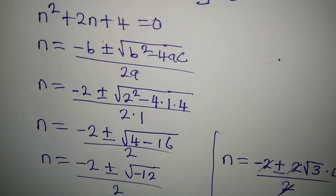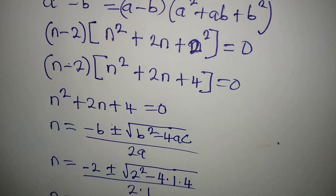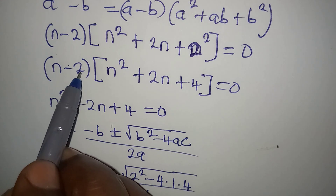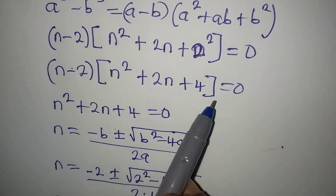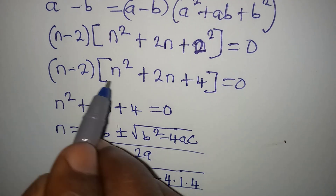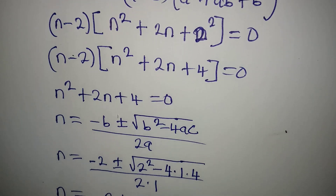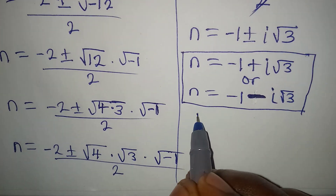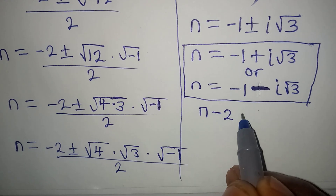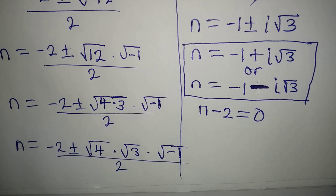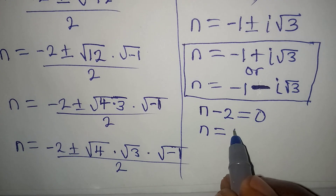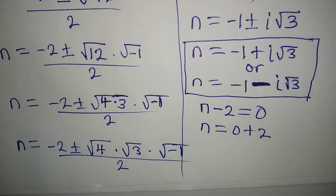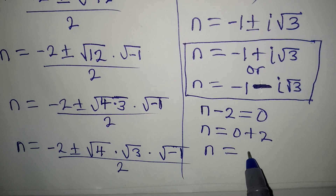To get the real solution, we will go back to the expression n minus 2, and we shall equate this to 0 as well. Because either of them must be equal to 0. So the expression is n minus 2 equal to 0, giving us a linear equation. From here, n is equal to 0 plus 2, and so our n is equal to 2.